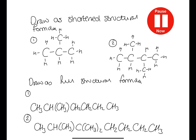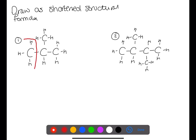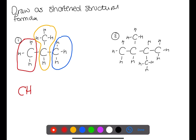Pause the video now and try to draw these examples as short and structural formula or as full structural formula. In the first example we will break this up into sections. In the red box we have CH3. In the yellow box we have a CH which has a CH3 branch, which we'll put in brackets, and in the blue box we have CH3.